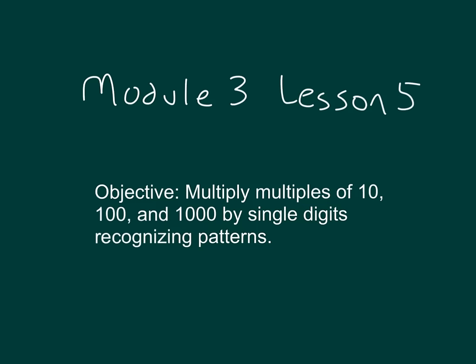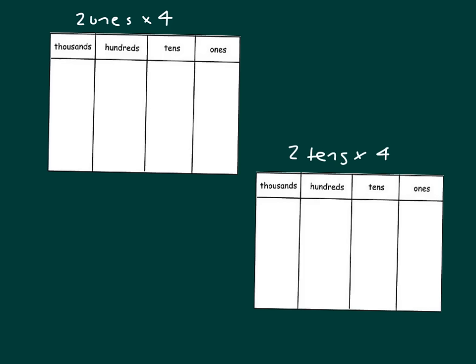The objective is to multiply multiples of 10, 100, and 1,000 by single digits, recognizing patterns. Let's take a look at a couple of problems here. We have two ones times 4, and then we also have two tens times 4. Let's see how these problems differ.